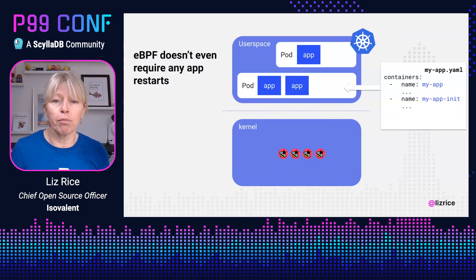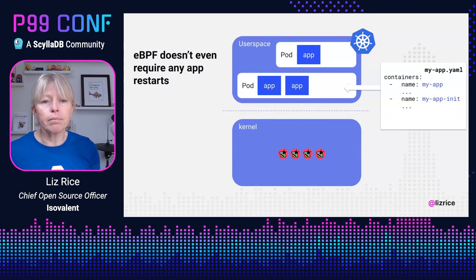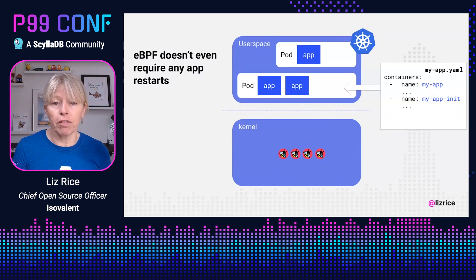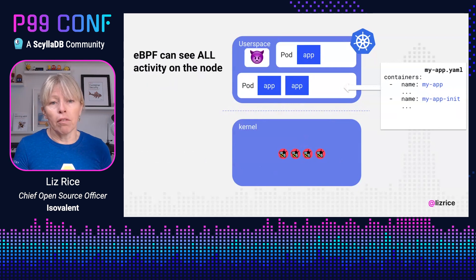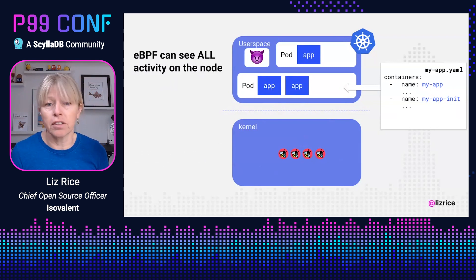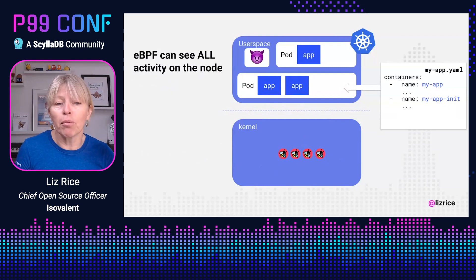As soon as we attach an eBPF program to an event like a syscall or a function in the kernel, it will immediately start acting whenever that event occurs, irrespective of which user space process caused it. So our running applications immediately get the benefit of observability, security, or networking capabilities implemented using eBPF programs. It's also more secure because every process on that machine is instrumented automatically — an eBPF security tool will immediately see any activity, even from a malicious process.